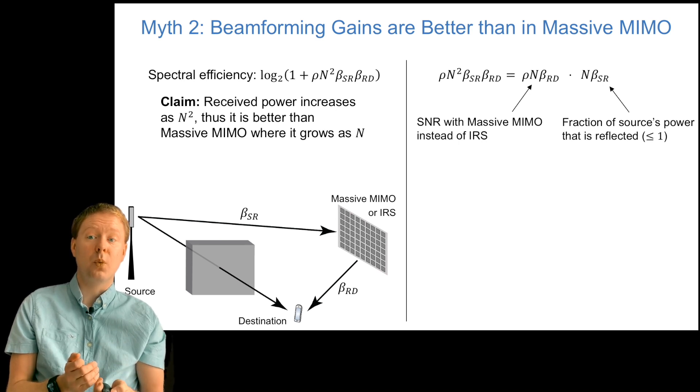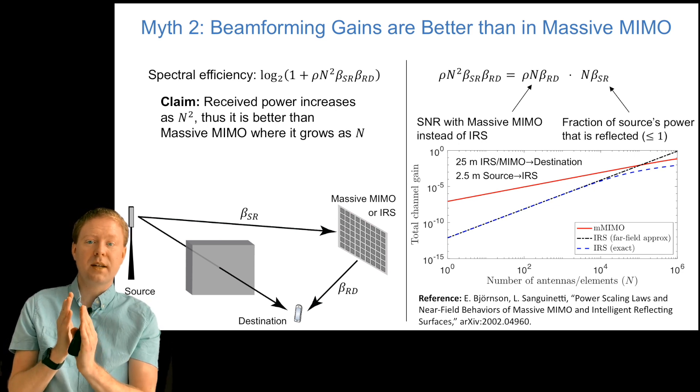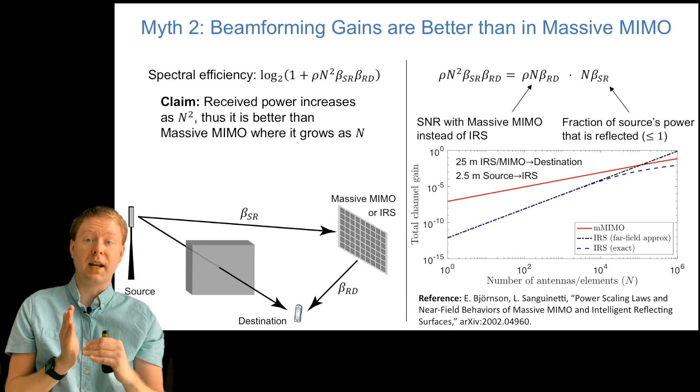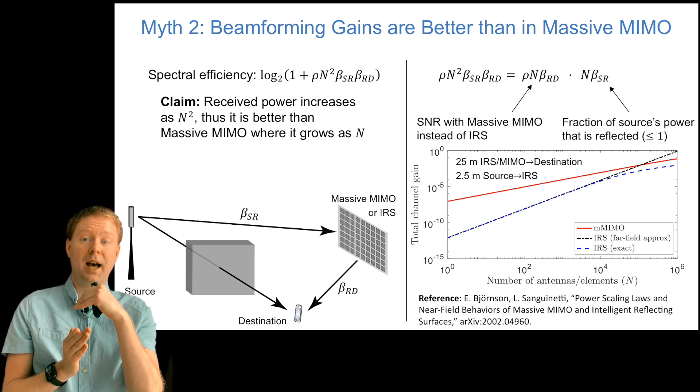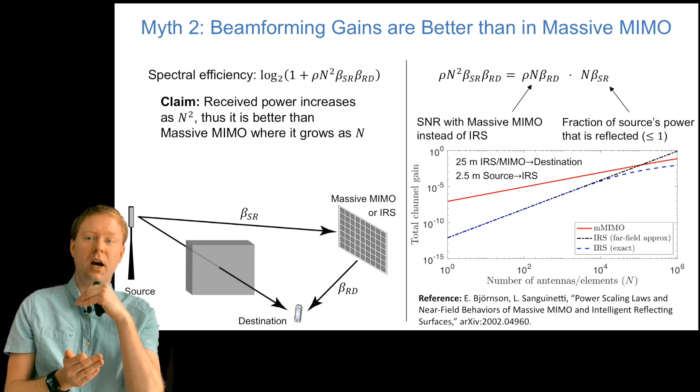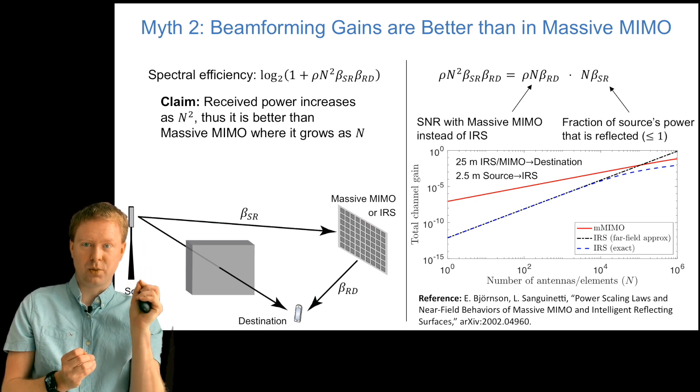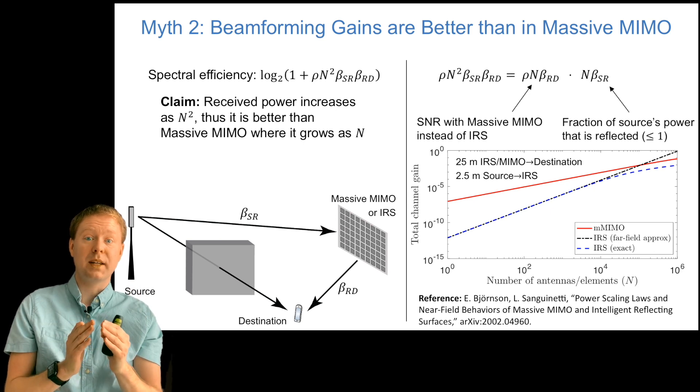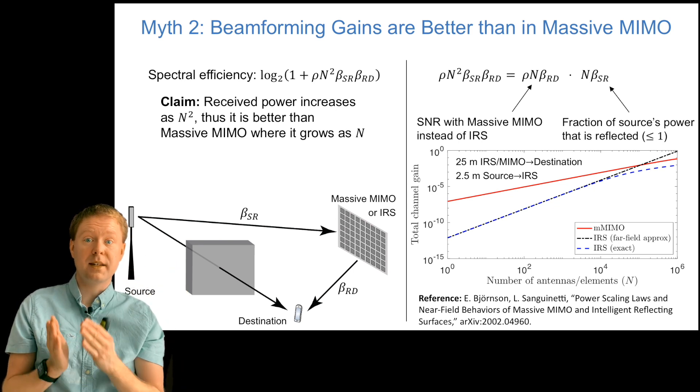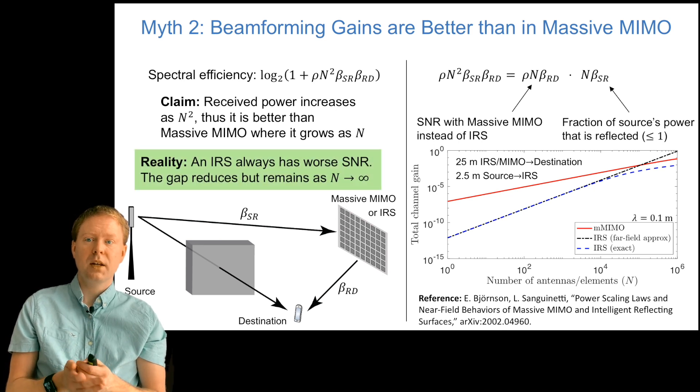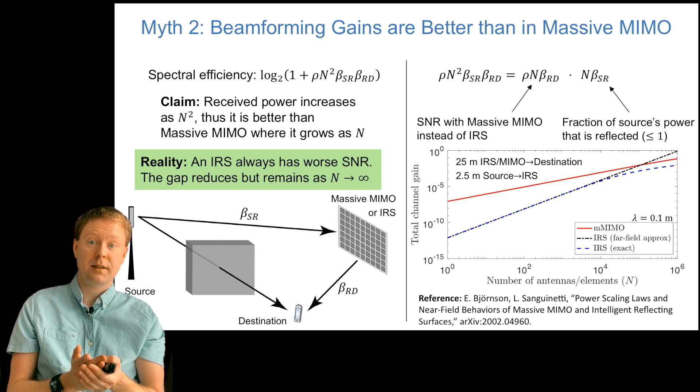Even if, as you can see in this graph here, when we increase the number of antennas or elements on the horizontal axis, and we look at the total channel gain, the red curve is what we get with massive MIMO. The blue and black curve here is showing what is happening with the IRS. It starts at a much lower number because of the multiplication of the betas. Then it increases with a higher slope. But when it would have crossed the red line, what actually happens is that we will enter the near field and therefore it will start to converge. We need to use another expression than this one in order to get the accurate results. An IRS will always have worse SNR than a massive MIMO. But the gap reduces with the number of antennas, but it will always remain.